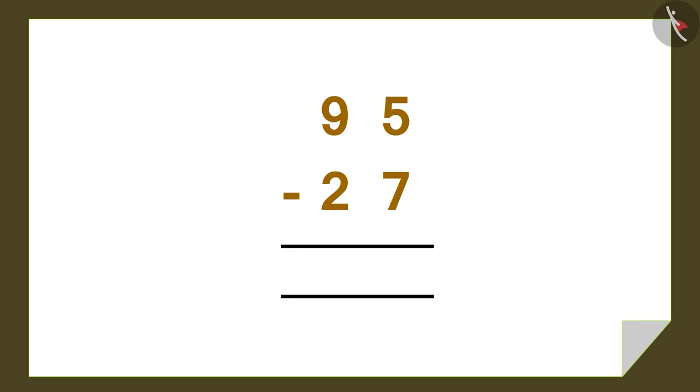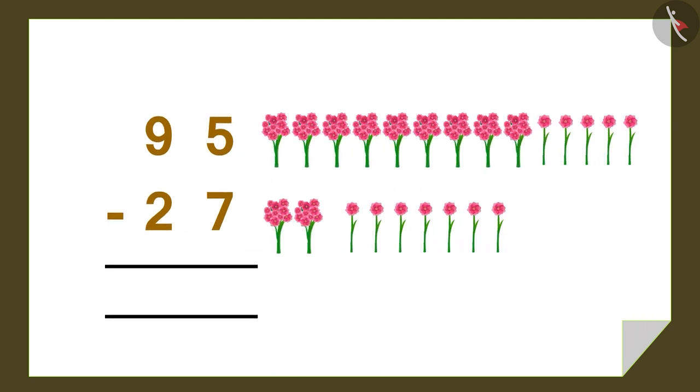We can also write the numbers in vertical rows in this way. Here, open flowers represent units and clusters of 10 flowers represent the number of tens.